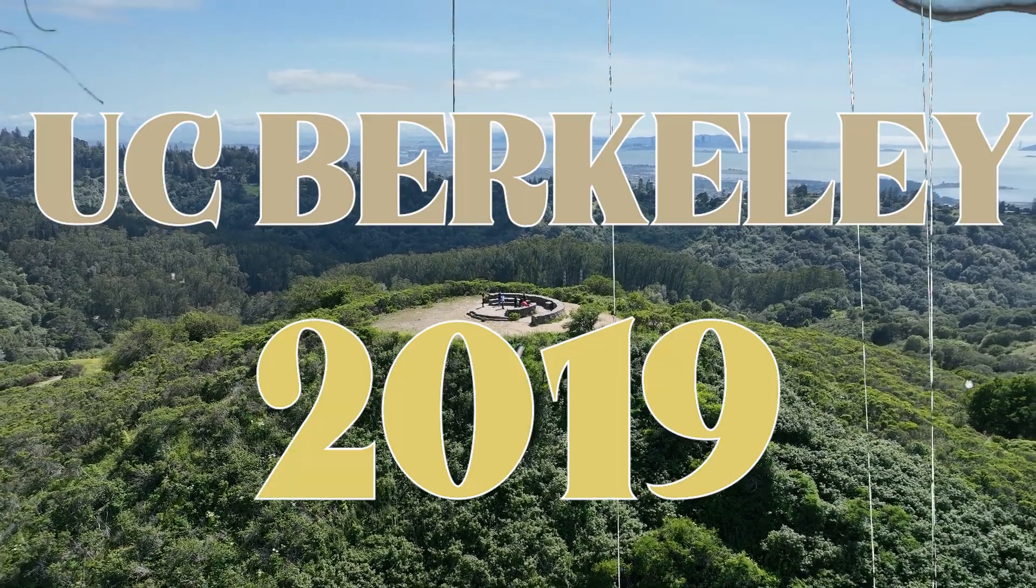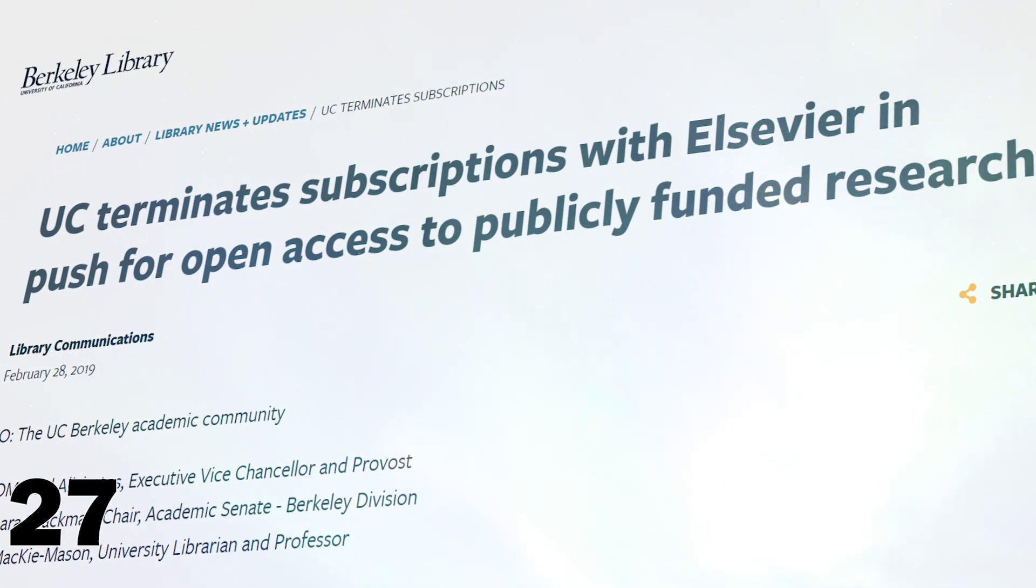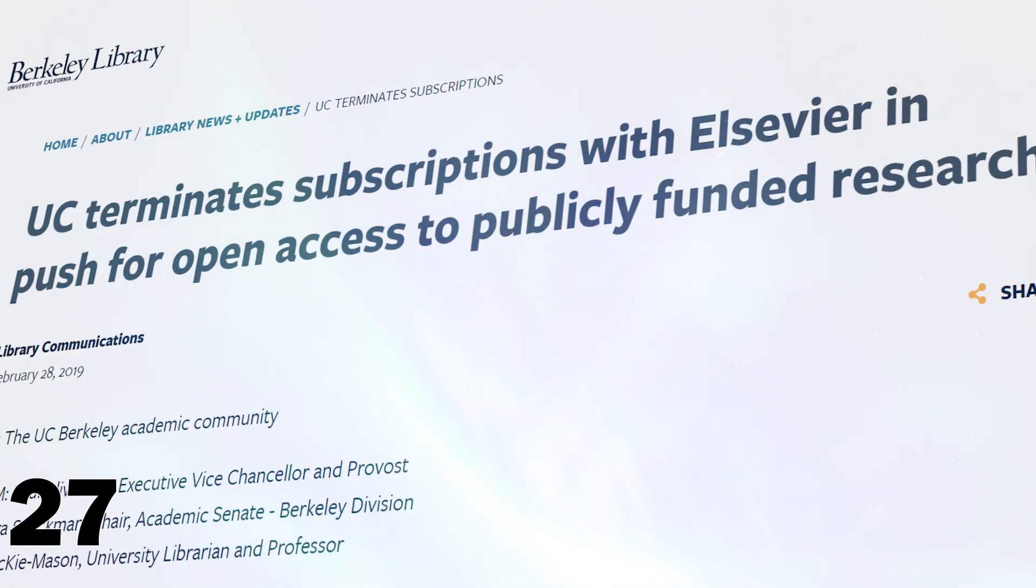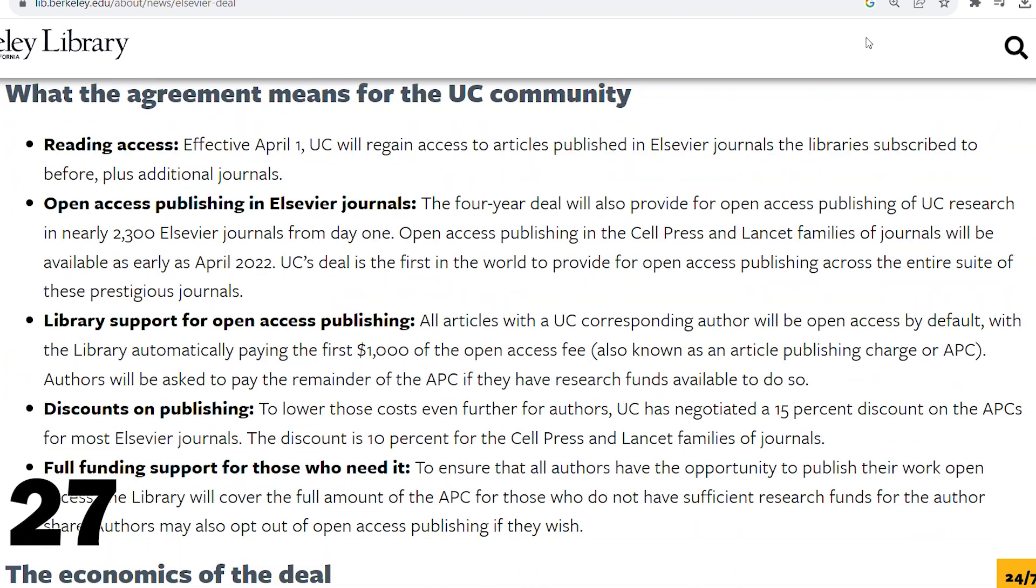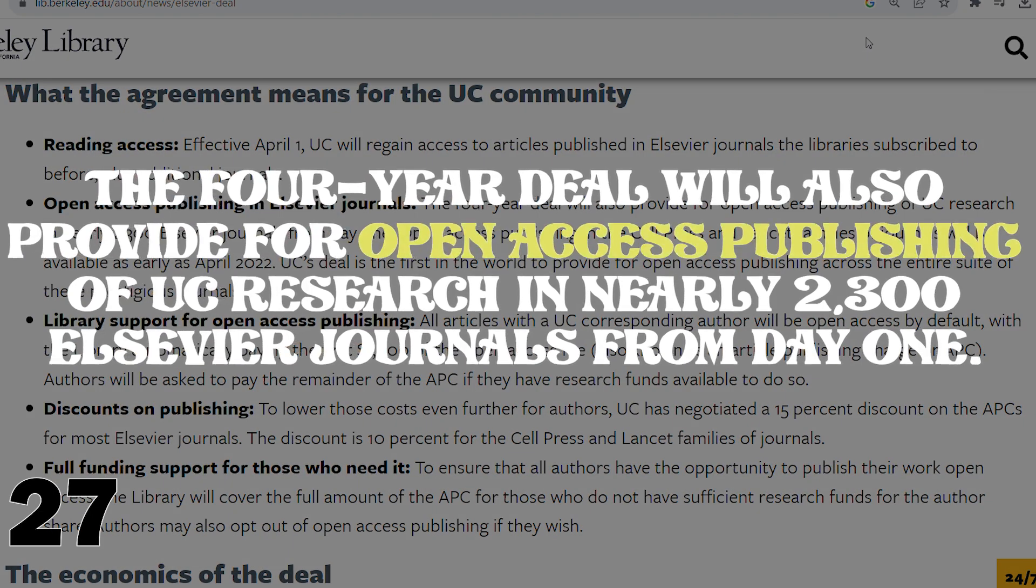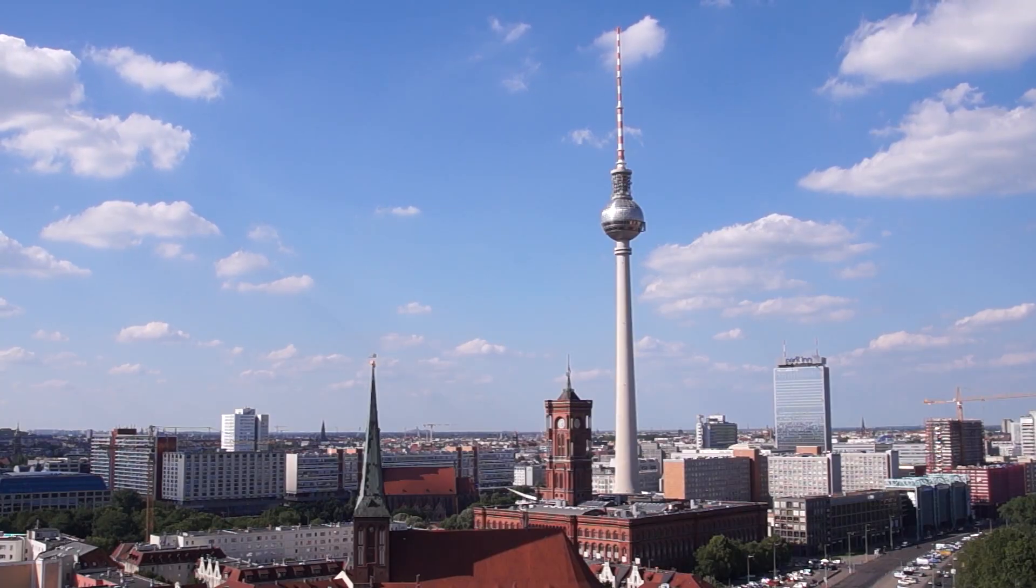It all began at UC Berkeley in 2019. The administrators decided to terminate a contract with one of the major publishers. The ongoing negotiations led to an agreement that all of the articles will be openly accessible for everyone. The Max Planck Society in Germany, together with over 300 universities in Germany and Sweden, followed suit.